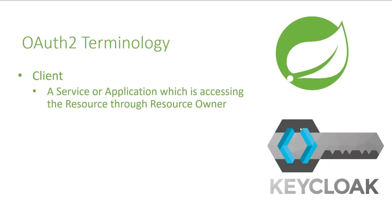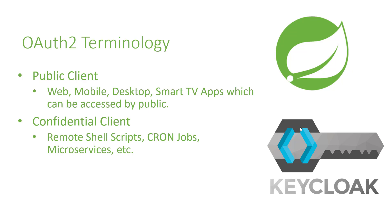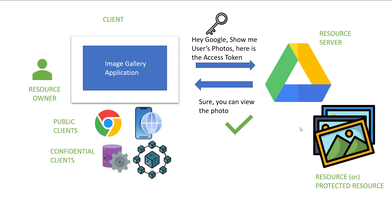The next term is client — the service or application accessing the resource, in our case the image gallery application. A client can be a web, mobile, desktop application, or a standalone service like a microservice, or even a device like a smart TV. We also have two categories of clients: a public client, which is a mobile or web or desktop application, and a confidential client, which can be a microservice or a cron job running on a remote server. For each client we have different kinds of authorization flows, also called grant types, meaning different mechanisms to get access tokens.